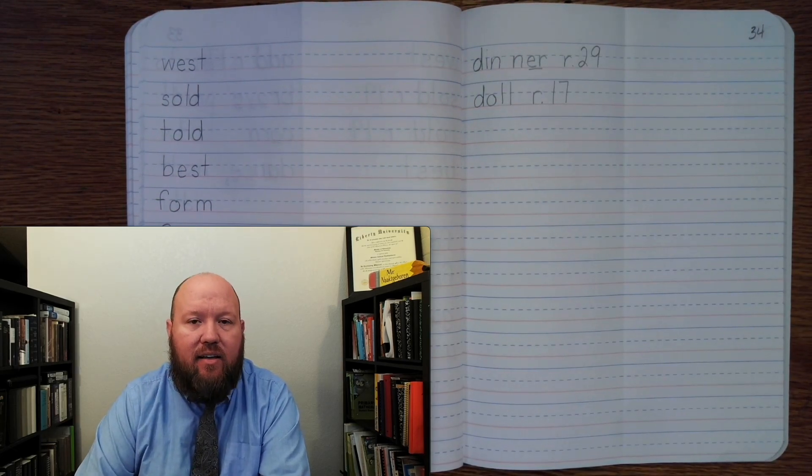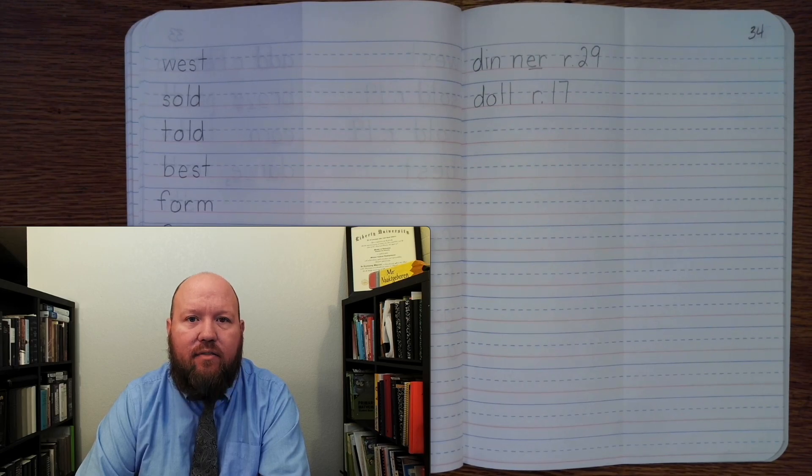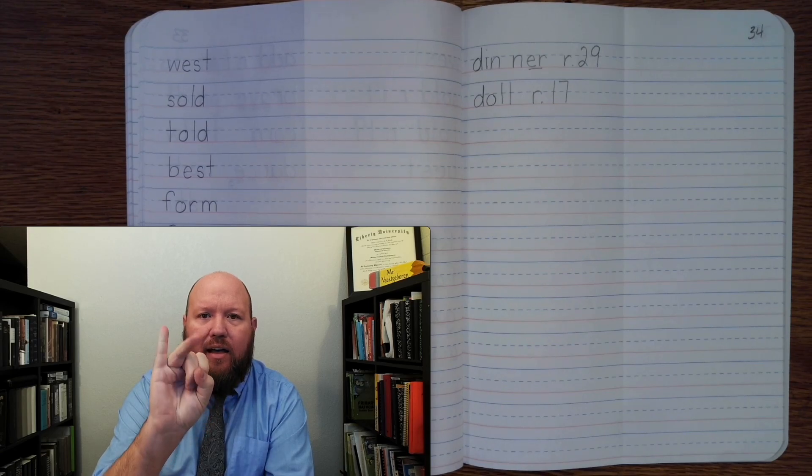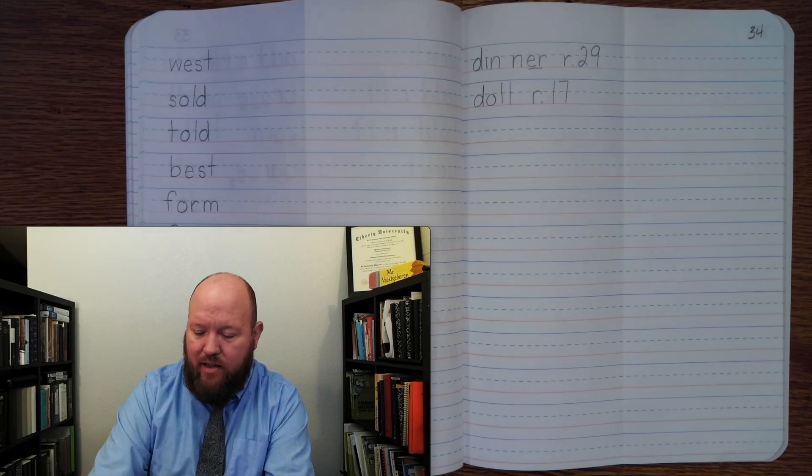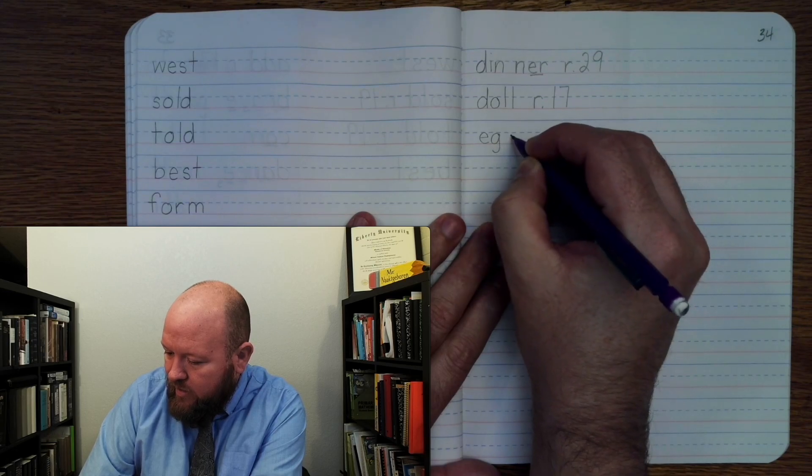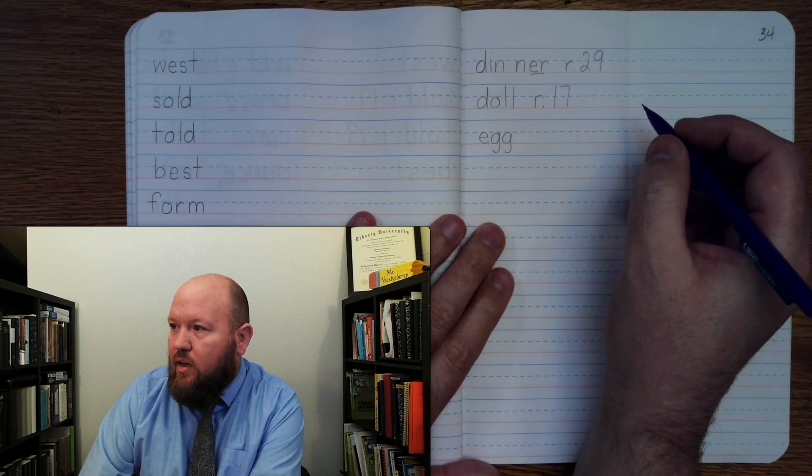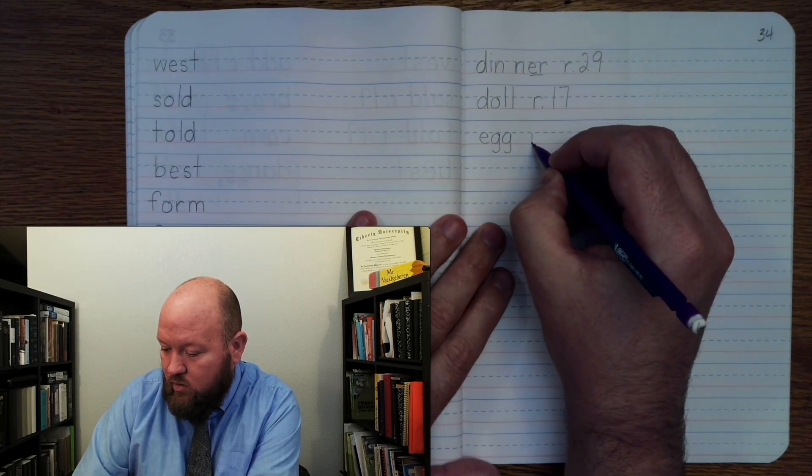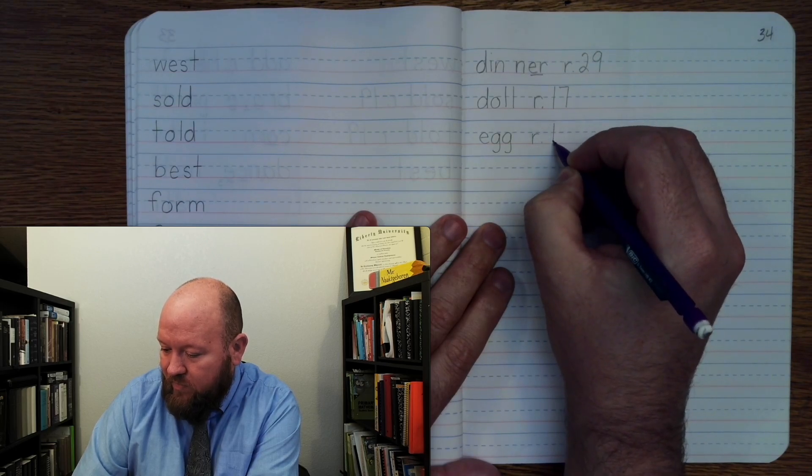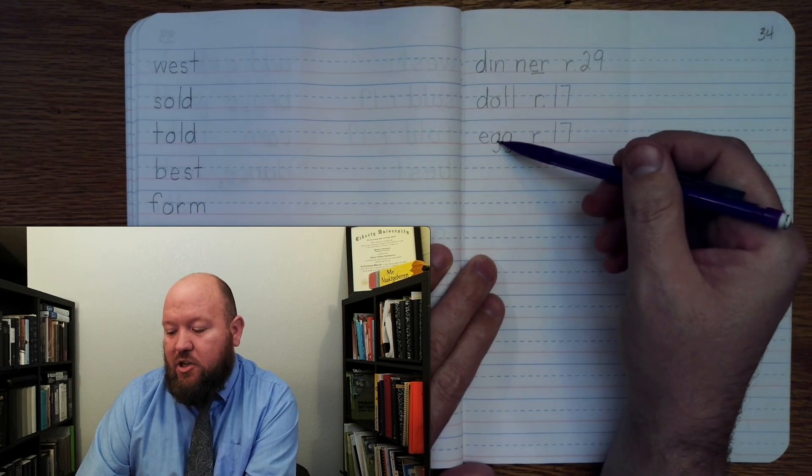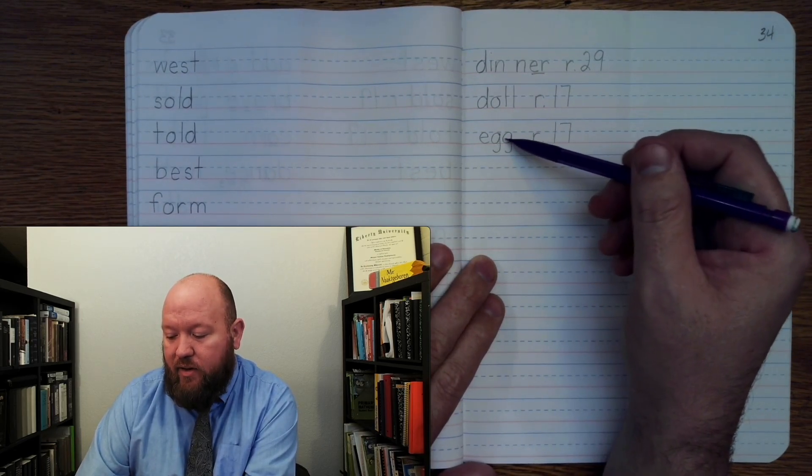The next word is egg. Like I want an egg for breakfast. Egg. Base word egg. E-G-G. Egg. Markings. E-G-G. Rule 17. Words that end in G will oftentimes double. Rule 17.